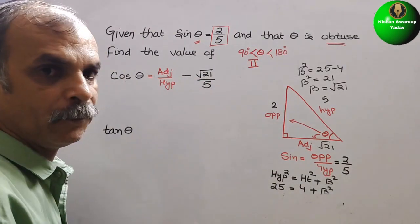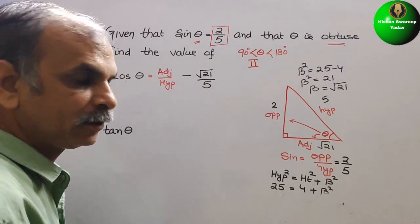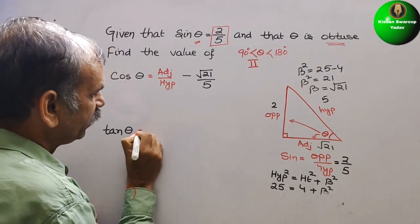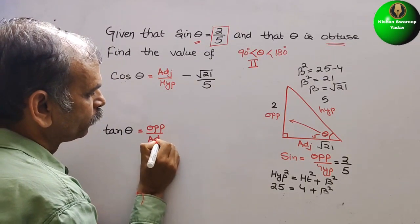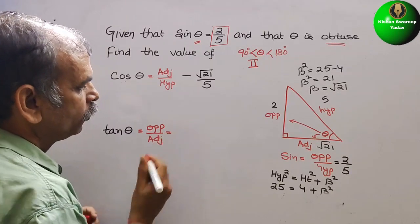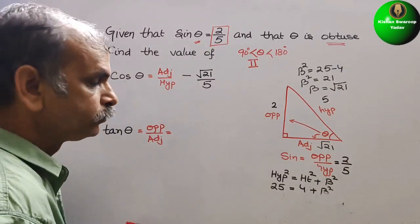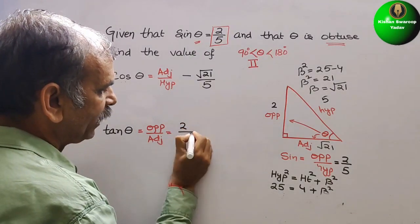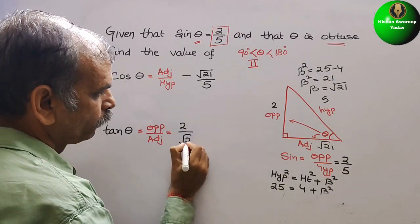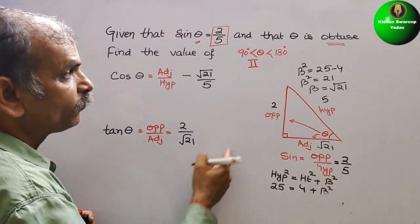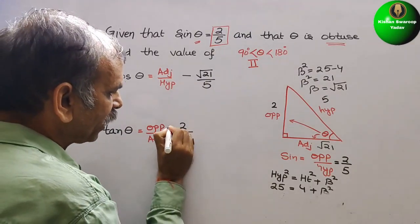Next comes to tan theta. Tan theta is opposite by adjacent. So we will write here, opposite by adjacent. Now, opposite is what? See that? 2. So here we will write 2 by adjacent is root 21. And for the second quadrant, tan theta is negative. So here we will write minus.